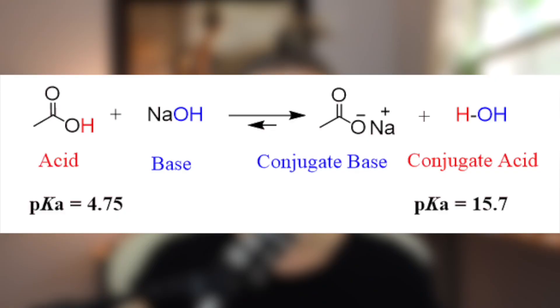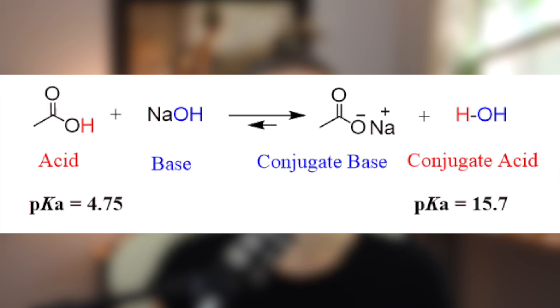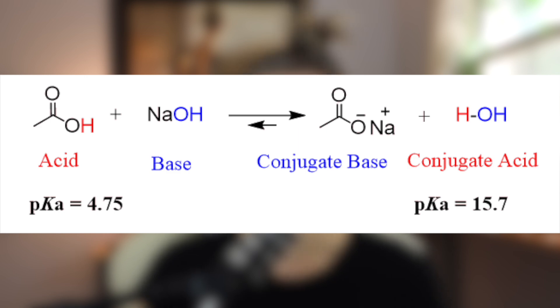On the product side of your reaction, you will see the conjugate base and acid. So whatever was your acid on the reactant side will become your conjugate base on the product side once it loses that proton, and vice versa for your base and your conjugate acid.